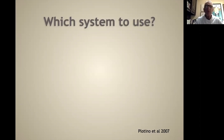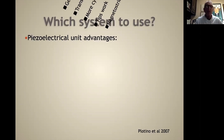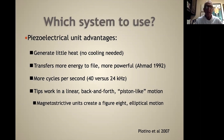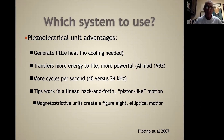So which system do we use? The piezoelectric unit has many advantages: it generates little heat with minimal cooling needed, and it transfers more energy to the file — more powerful — as shown by Ahmad in 1992. It works at 40 cycles per second versus 24 cycles per second for the magnetostrictive principle. The tips work in a linear back-and-forth piston-like motion, as versus the magnetostrictive units, which create a figure-eight elliptical motion used in the Cavitron. We can't use figure-eight because that would destroy tooth structure, so we work with the piezoelectric principle.